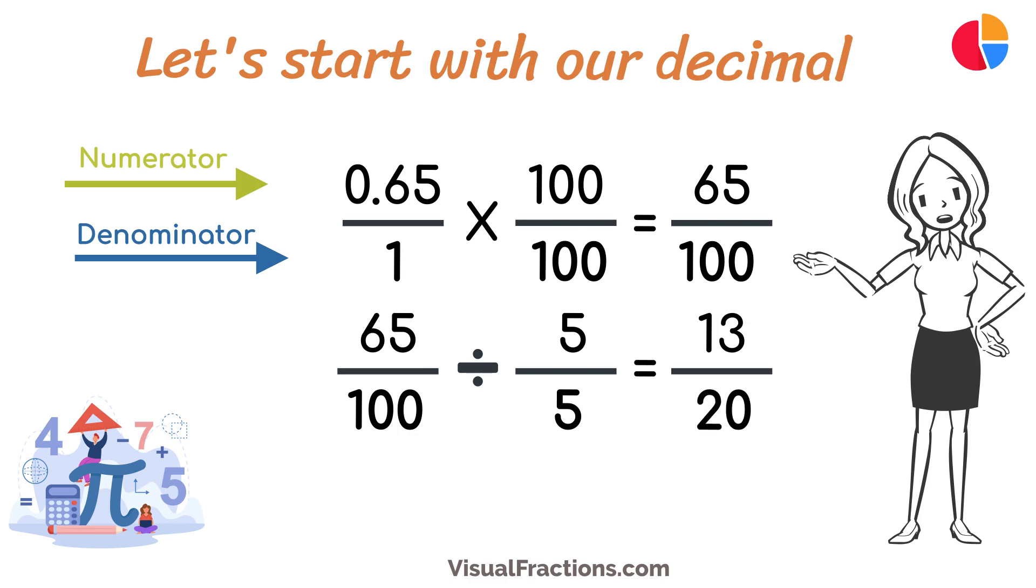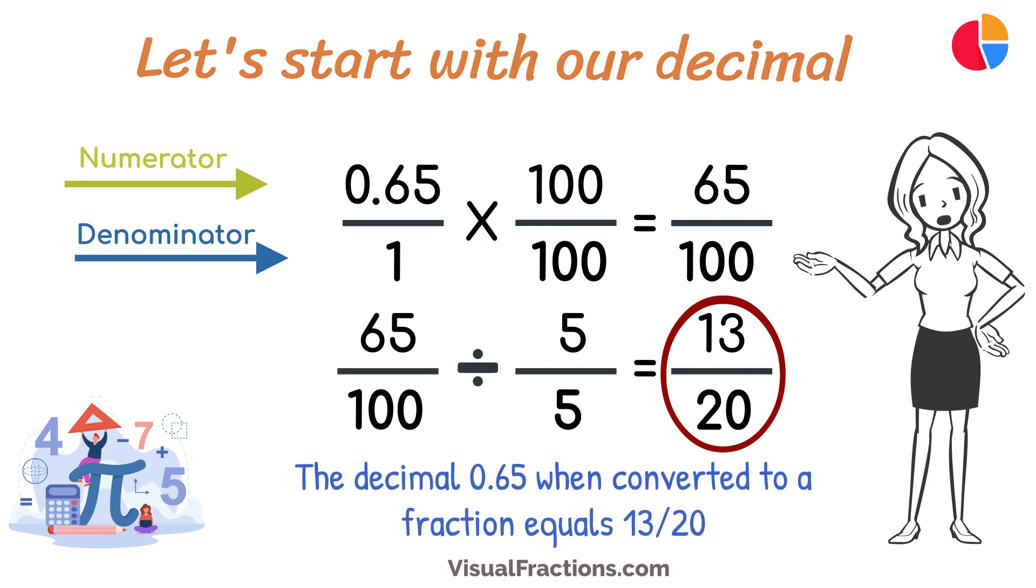So, 65 one-hundredths simplifies neatly to 13 twentieths. And there you have it. The decimal 0.65 when converted to a fraction equals 13 twentieths.